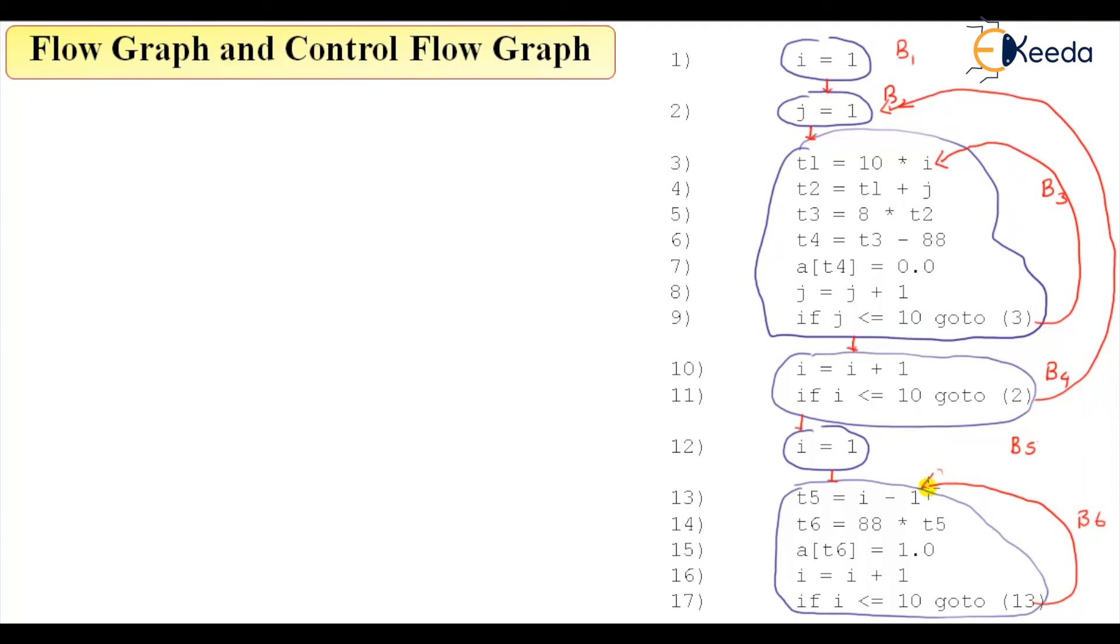Now this is a flow graph. Okay, now this is called a flow graph. Now in this flow graph we'll stack add here start and end node. So now just add here a start node, start a node.